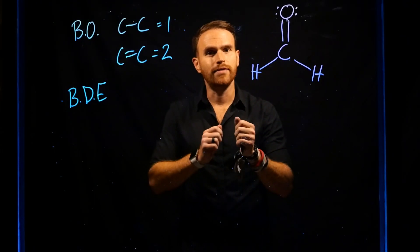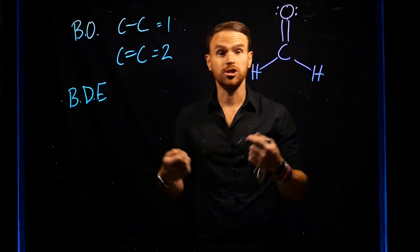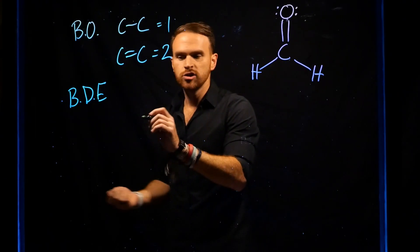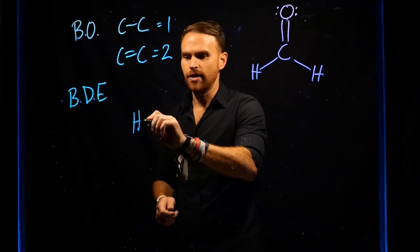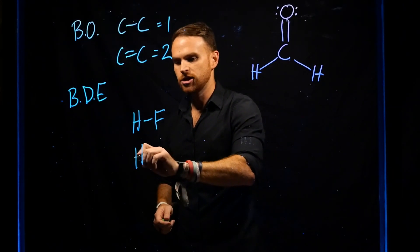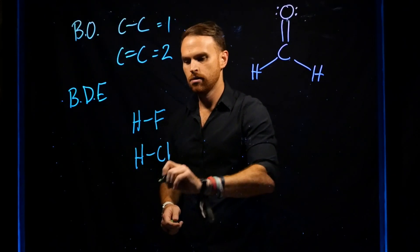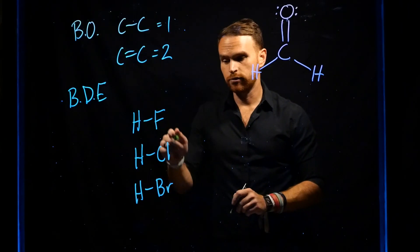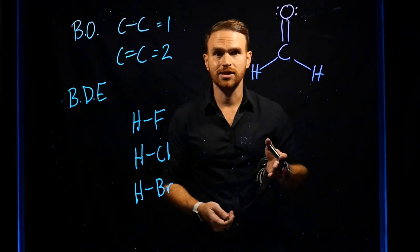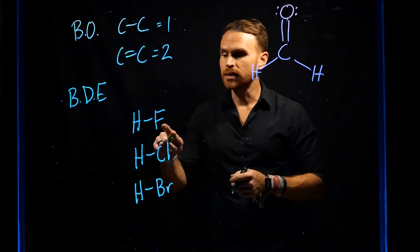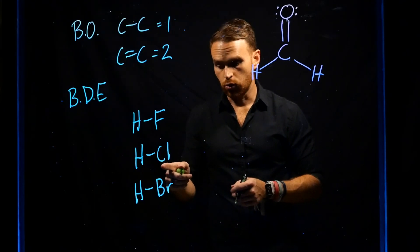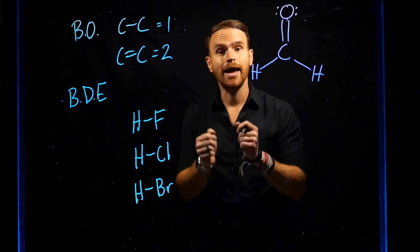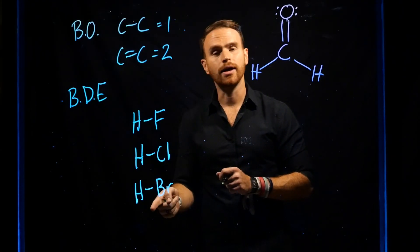Another thing to consider when evaluating bond distance and bond dissociation energy is which atoms are involved in the bonding. Consider HF versus HCl versus HBr. Fluorine, chlorine, and bromine are all halogens or group 17 on the periodic table. Because fluorine is smaller than chlorine and bromine, the H–F bond is actually going to be shorter and stronger than the H–Cl and H–Br bonds.